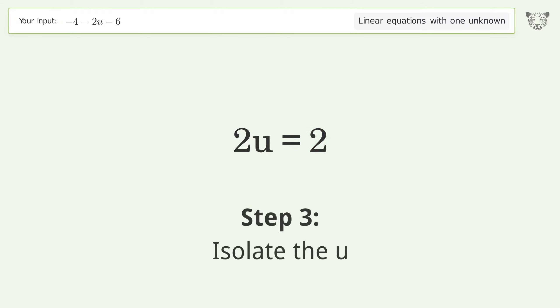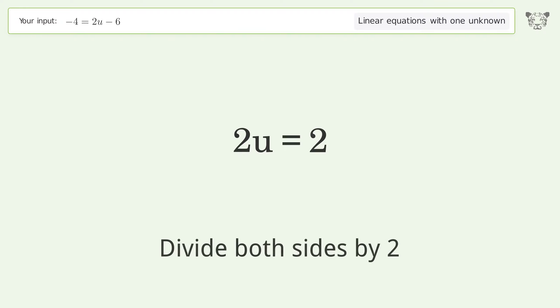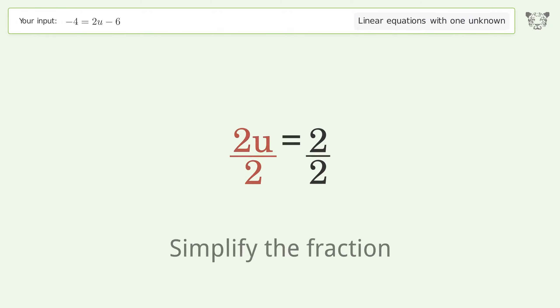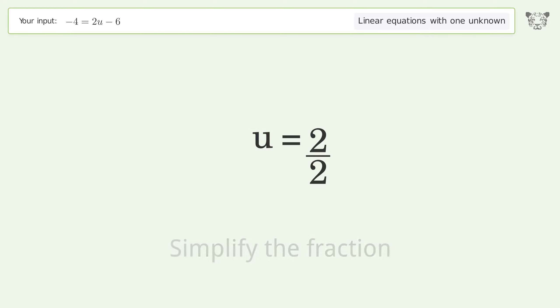Isolate the u. Divide both sides by 2. Simplify the fraction. And so the final result is u equals 1.